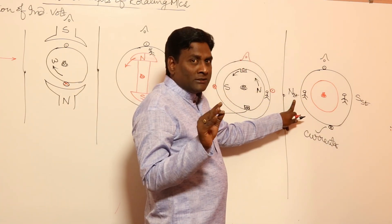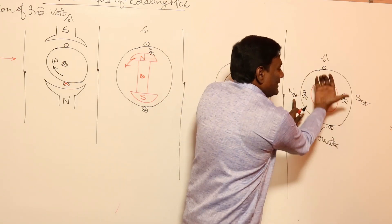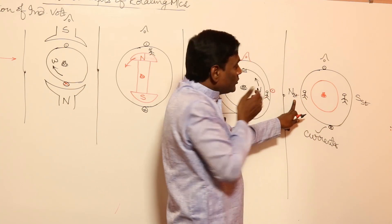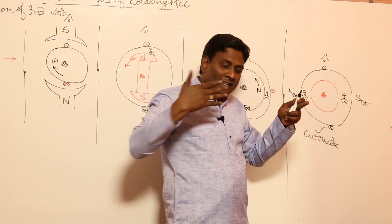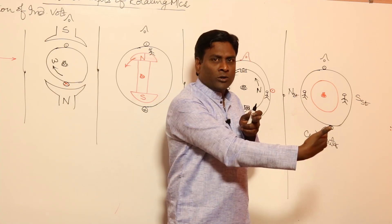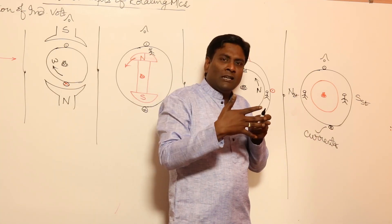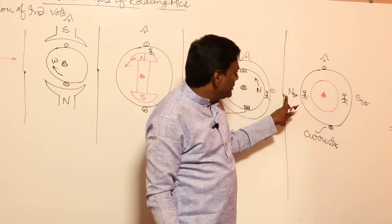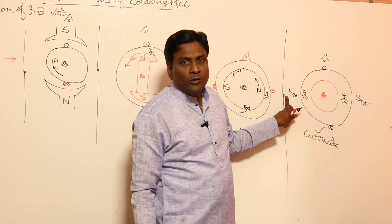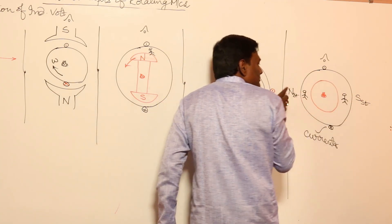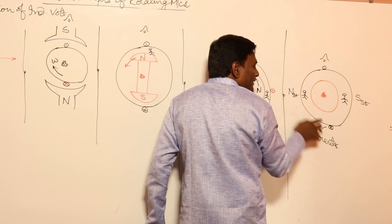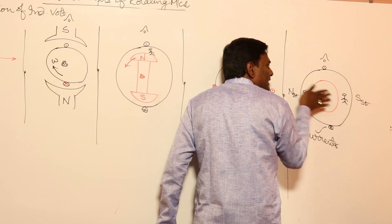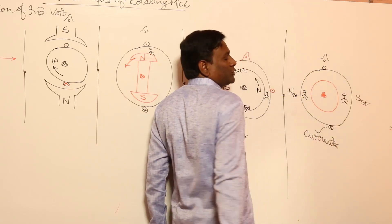Most guys will be confused here — focus. Cross here, dot here — these are currents. Flux is in this direction, so flux should be in this direction. Here is the air gap; this is the stator; this is where you are sitting. Flux is coming out here — means if you sit and see the stator, flux is coming out towards you, so this should be N pole. And flux is going into the stator on the other side, so it should be S pole.